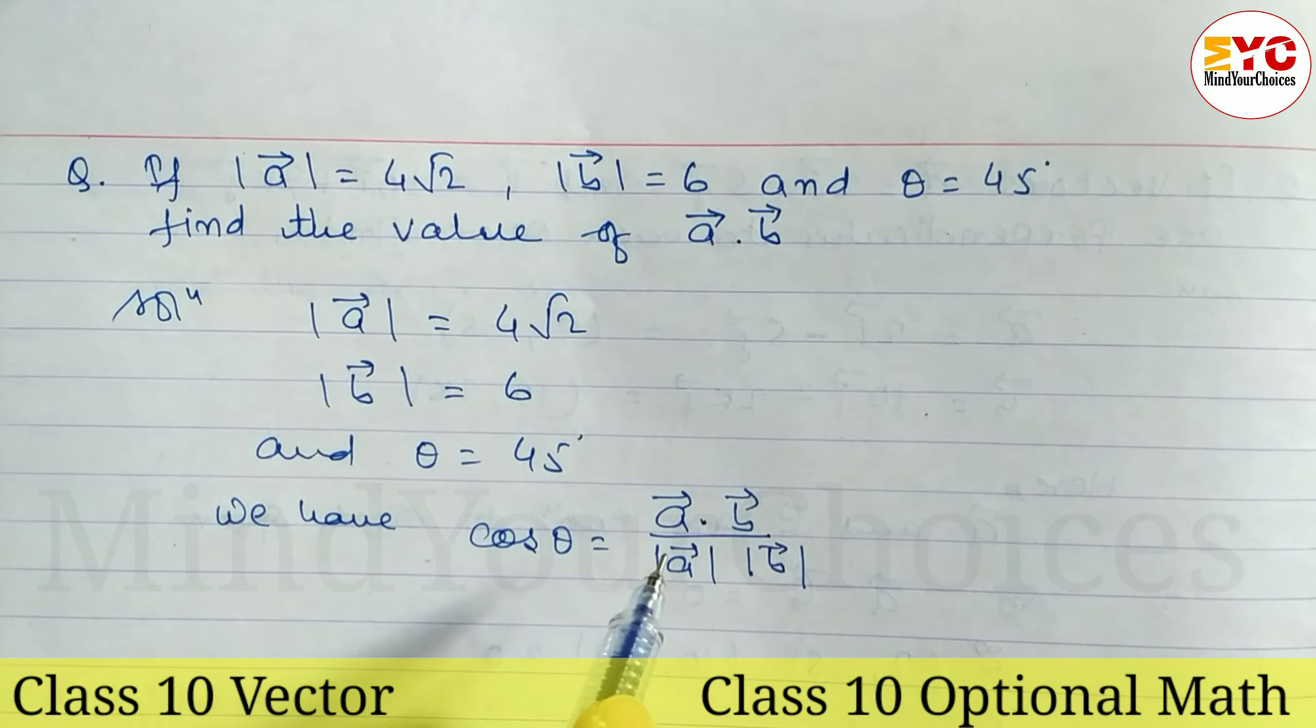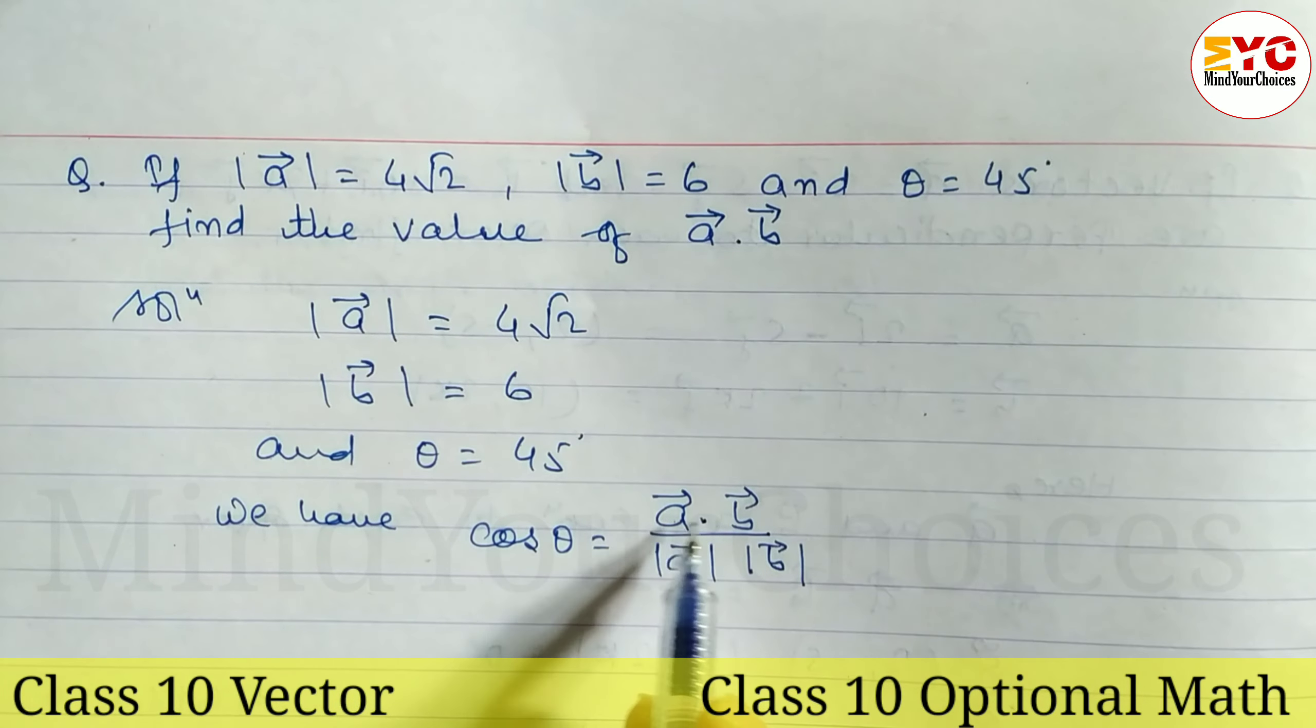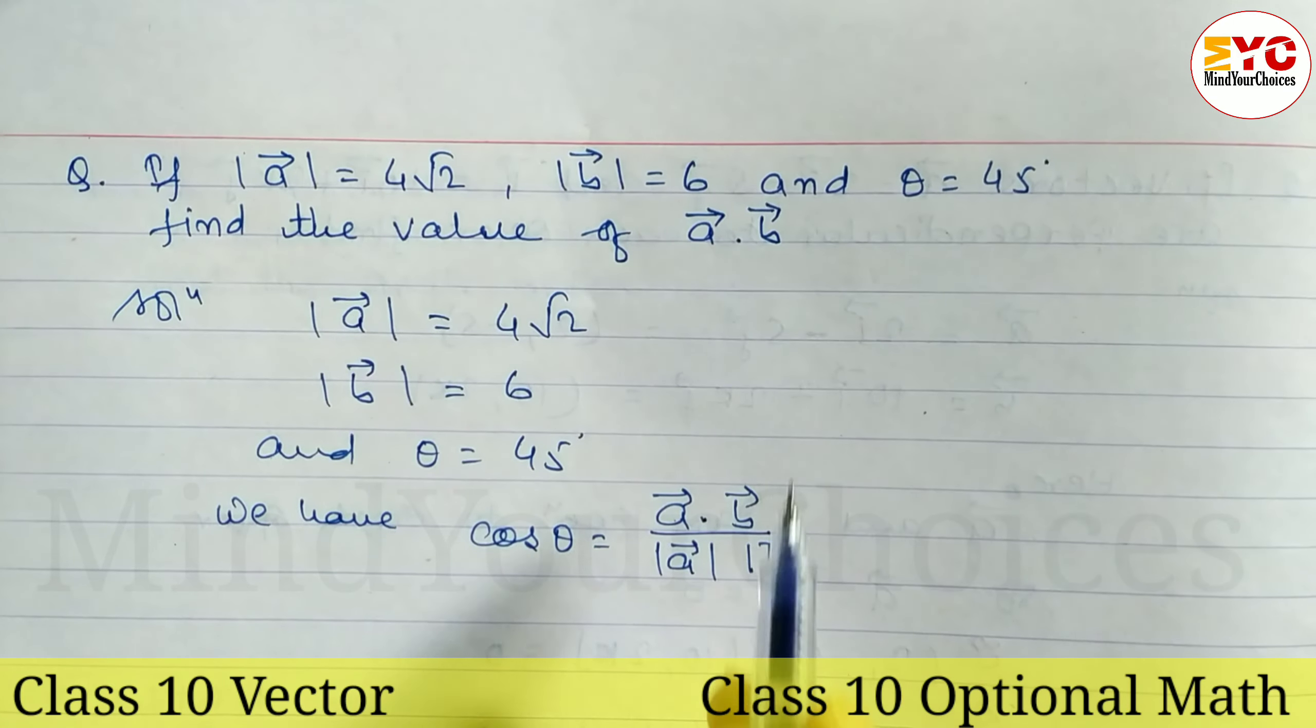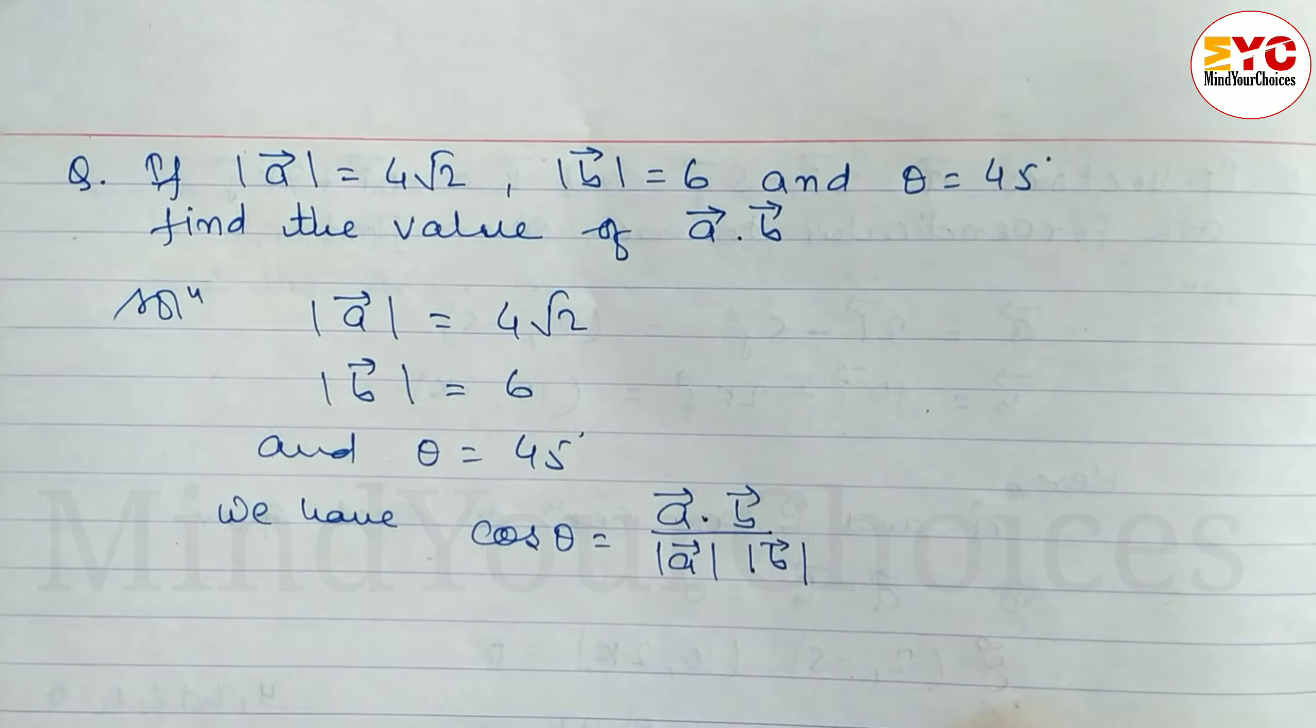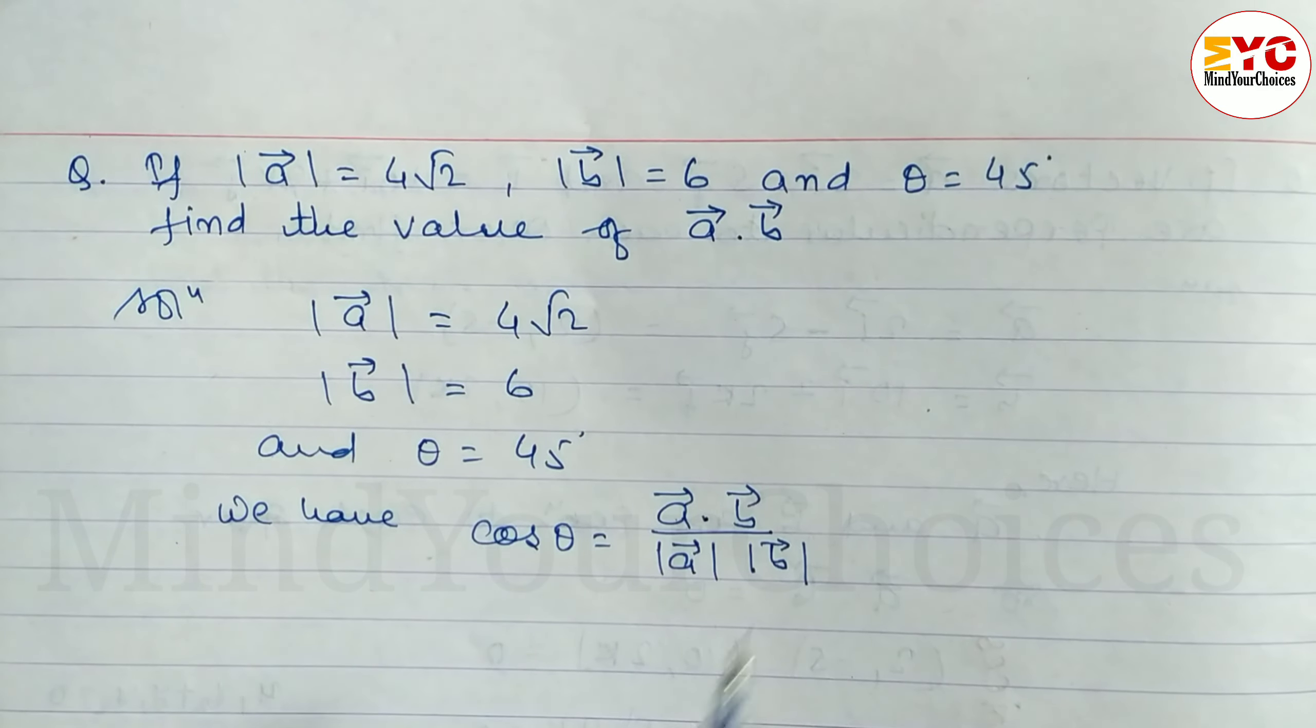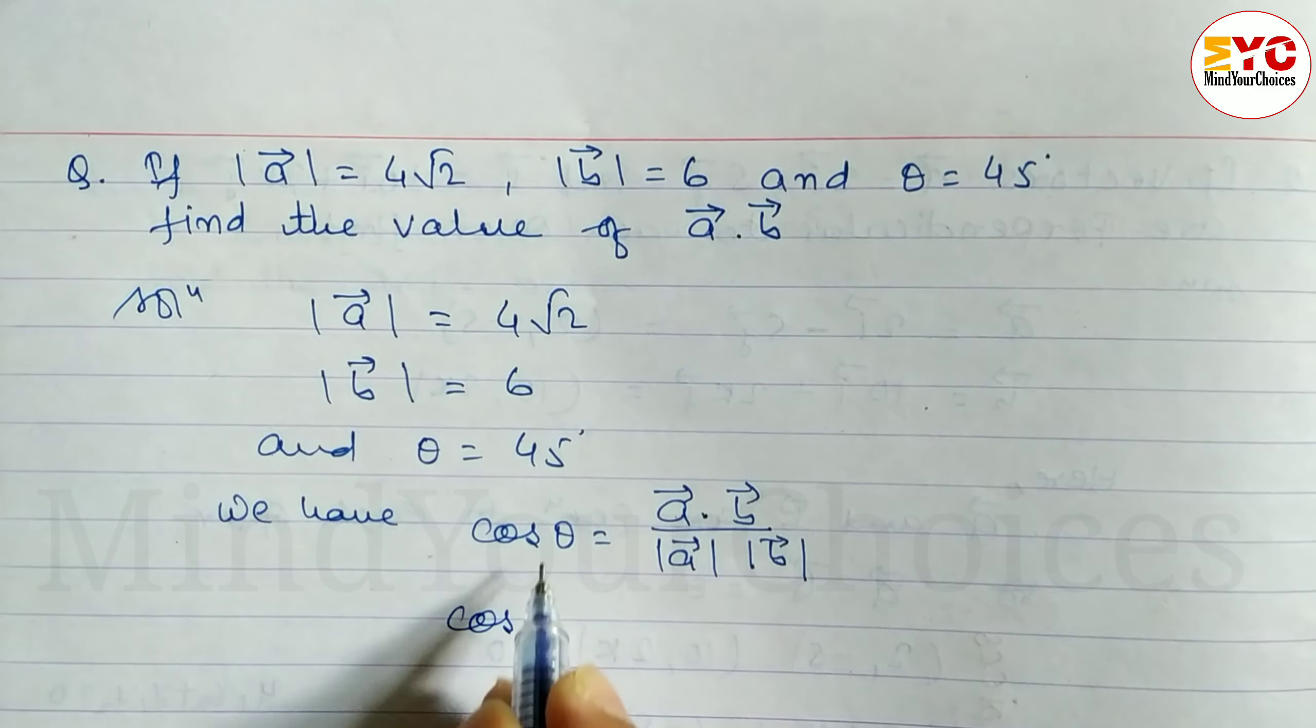Look here, to find a dot b, modulus a and modulus b are already given, and theta value is given, so we can find out cos theta. Therefore, we can find a dot b.